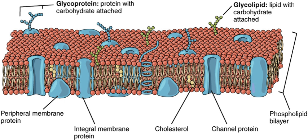A biological membrane or biomembrane is an enclosing or separating membrane that acts as a selectively permeable barrier within living things. Biological membranes, in the form of eukaryotic cell membranes, consist of a phospholipid bilayer with embedded, integral and peripheral proteins used in communication and transportation of chemicals and ions. The bulk of lipid in a cell membrane provides a fluid matrix for proteins to rotate and laterally diffuse for physiological functioning.